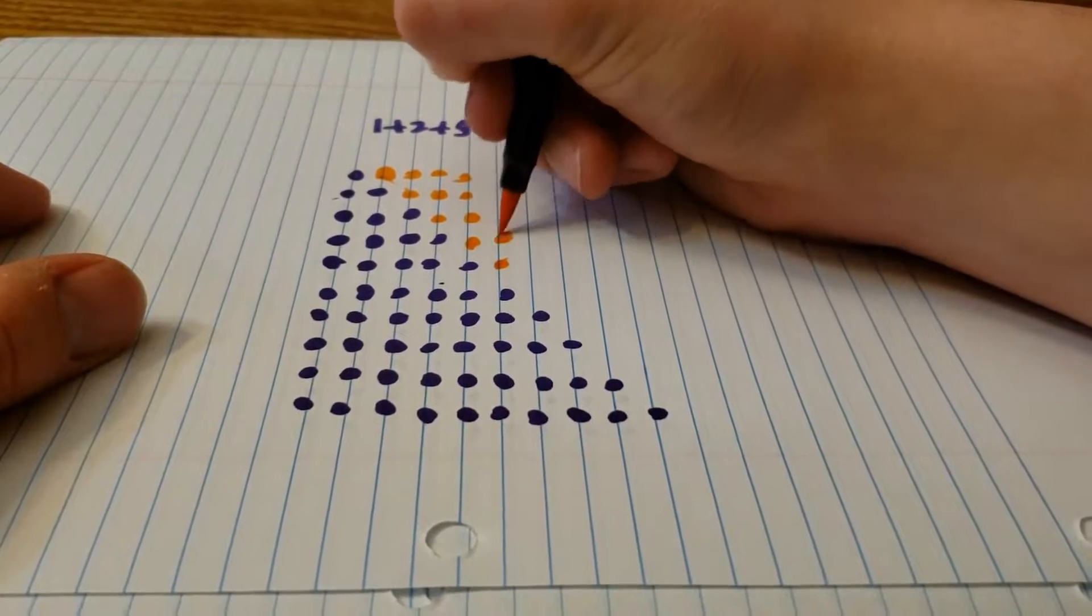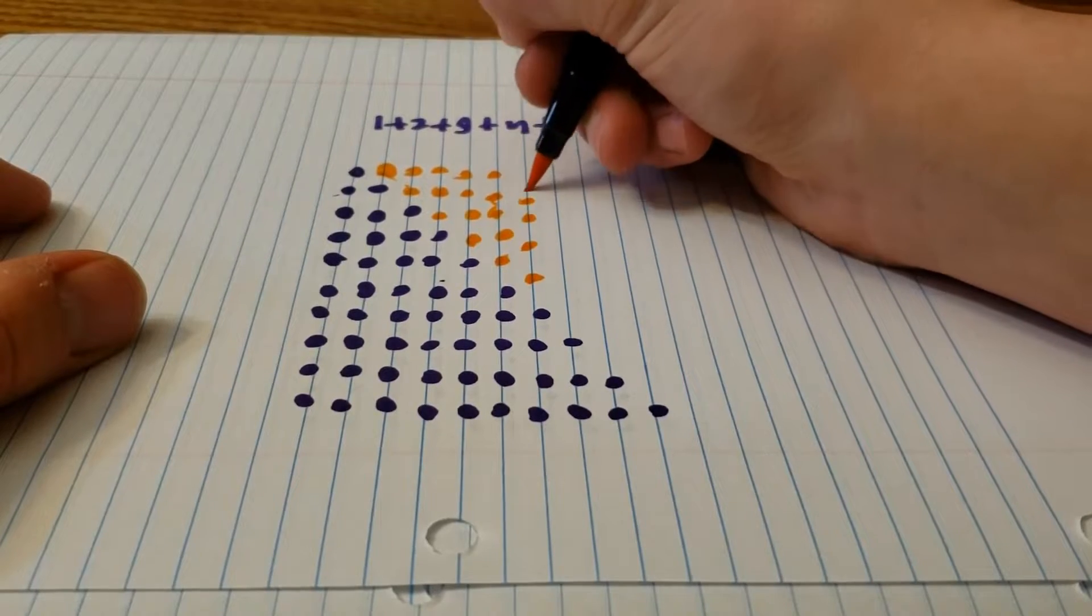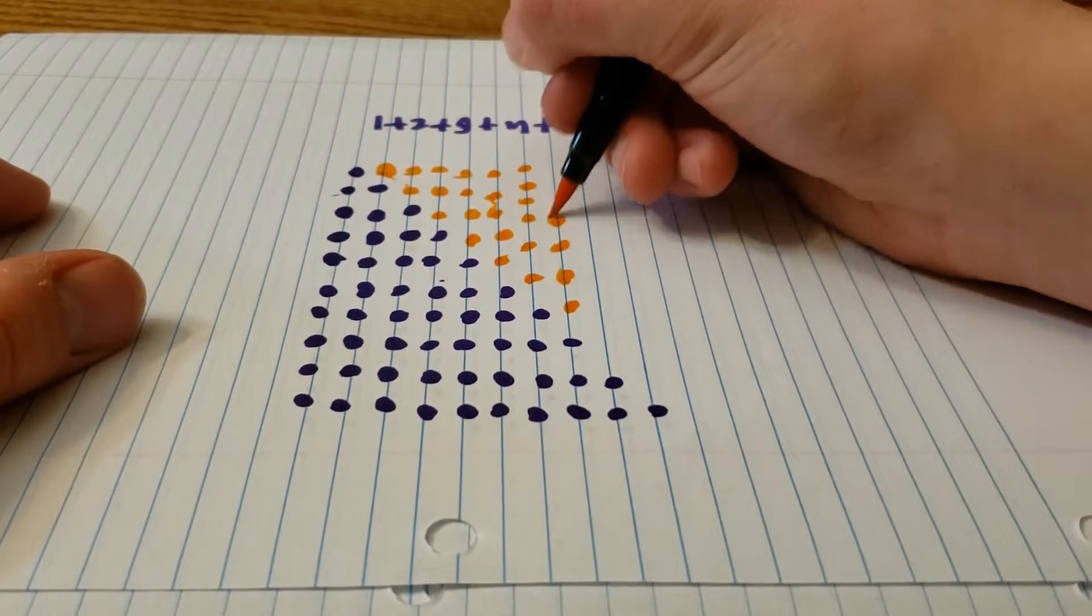We want to find the area of half that since we doubled the triangle. So the area of the triangle is 55, and thus our answer is 55.